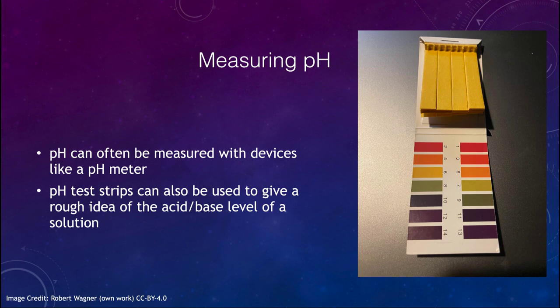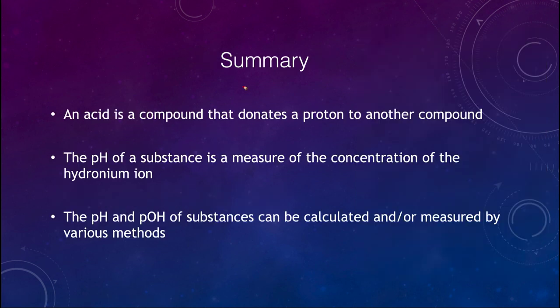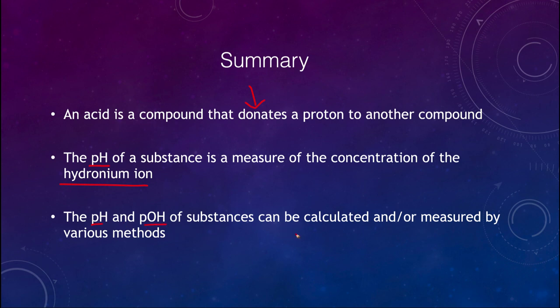In summary: an acid donates a proton to another compound, while a base accepts a proton. pH is the measure of the hydronium ion concentration — lower pH means very acidic, higher pH means very basic. We looked at how to calculate pH and pOH from concentrations and vice versa, and how to measure them using pH meters and pH strips. That concludes this lecture on acids, bases, and pH. We'll be back next time for another topic in physical science — have a great day everyone!